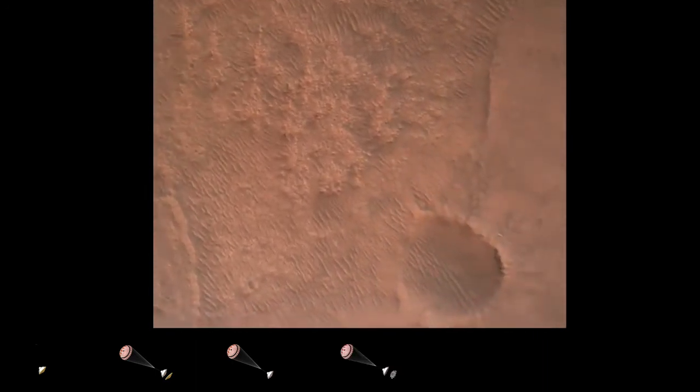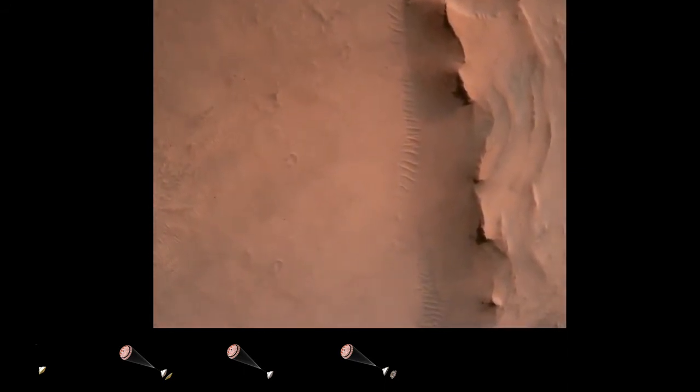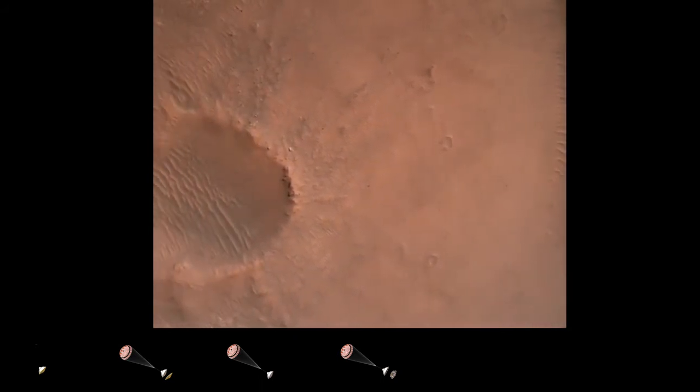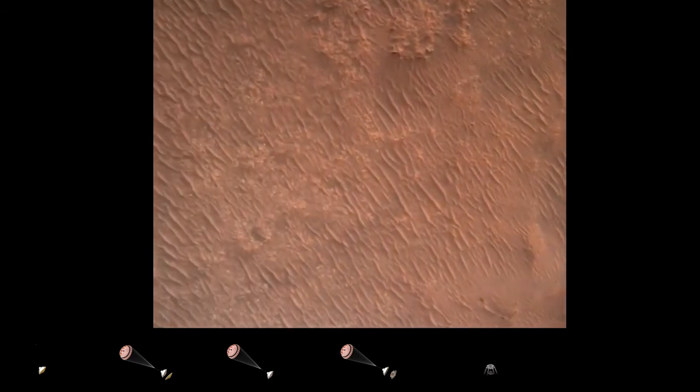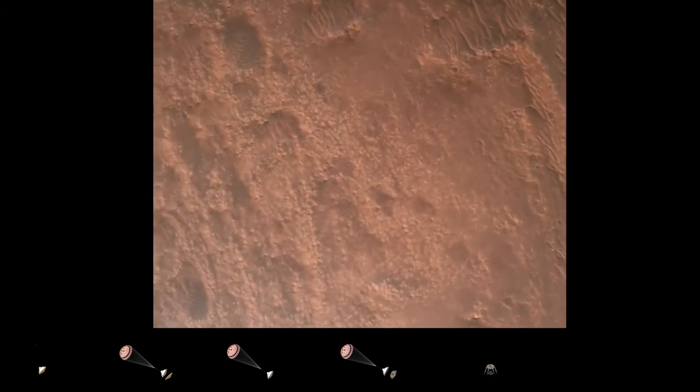Backshell separated. Current velocity is 83 meters per second at about 2.6 kilometers from the surface of Mars. We have confirmation that the backshell has separated. We are currently performing the divert maneuver. Current velocity is about 75 meters per second at an altitude of about a kilometer off the surface of Mars.